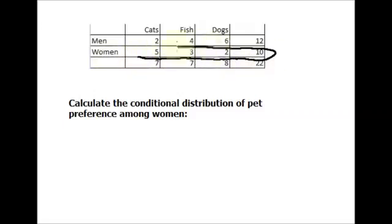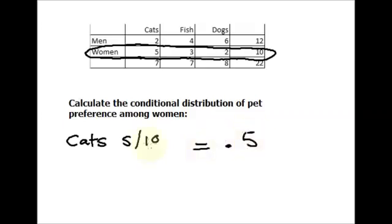It's women's choices for pets. Cats, we have 10 total women and for cats we have 5 women who prefer them. So we've got cats, 5 out of 10 women prefer cats. That's a probability of 0.5 if we divide this.